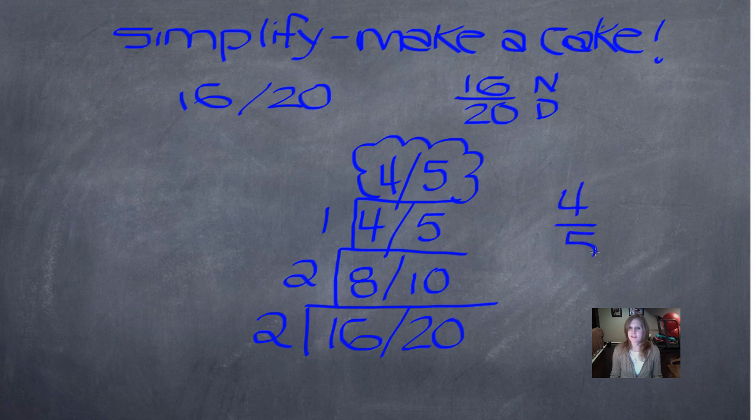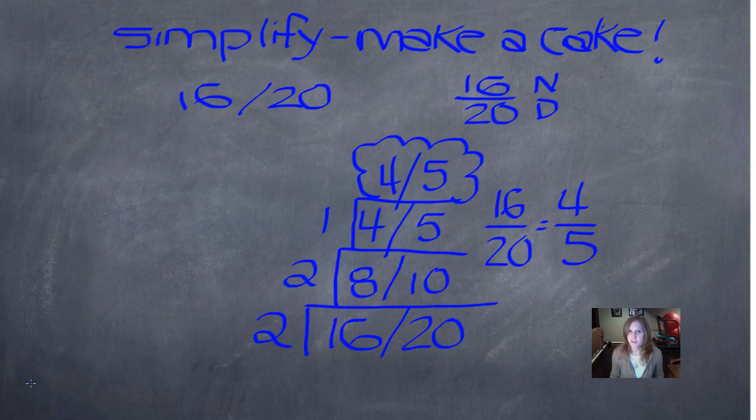4/5 is 16/20 simplified. Simplify. Make a cake. Look for the bride and groom.